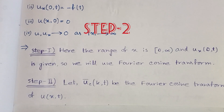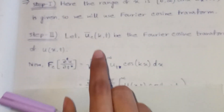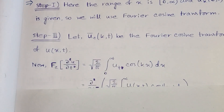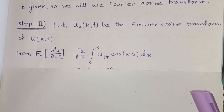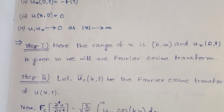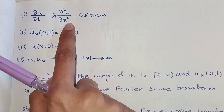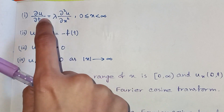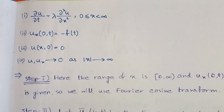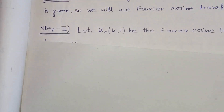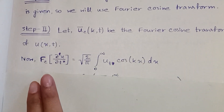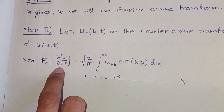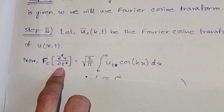Step 2: let us denote the Fourier cosine transformation of u(x, t) as ū_c(k, t). Now in Step 2, in order to find the Fourier transform of the whole equation, we are going to find the Fourier cosine transform of the LHS and RHS individually. So: F_c of ∂u/∂t, which is on the LHS.